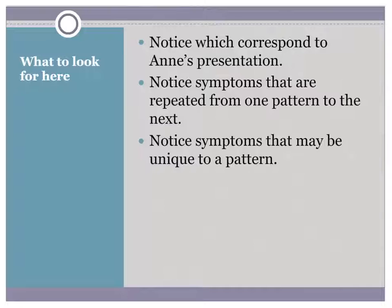Now we're going to approach Anne's case with the idea that we'll go to the books and try to look for Anne — doing what we do when we don't know how to diagnose. We'll do this in quite a lot of detail to show why this doesn't work and why we get confused when we try to go to the book to look for our patients. Notice which symptoms correspond to Anne's presentation, with an eye to the fact that Anne's symptoms run the gamut of patterns — heat, blood deficiency, qi stagnation. Also notice symptoms repeated from one pattern to the next, and symptoms unique to a particular pattern.